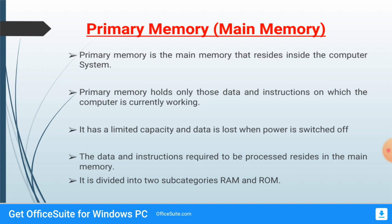Primary memory is also called main memory. It is the memory that resides inside the computer system. It holds the data on which the computer system is currently working. For example, if I am typing in MS Word, that application comes into primary memory — the data on which the computer is currently working is in primary memory.